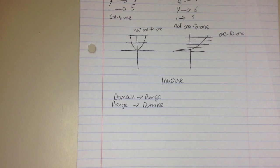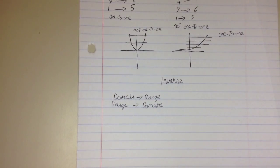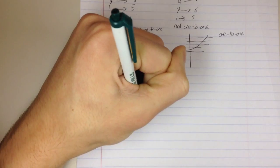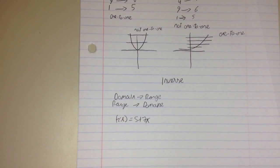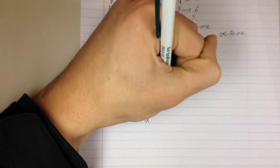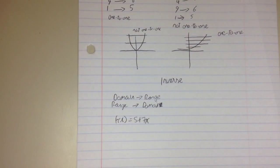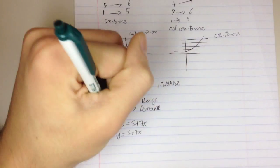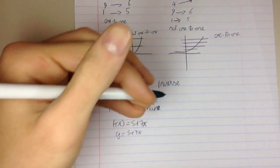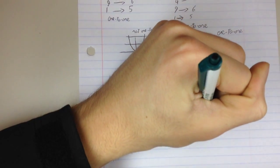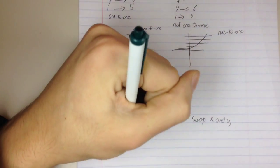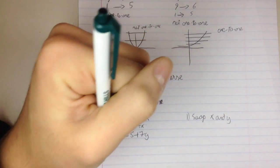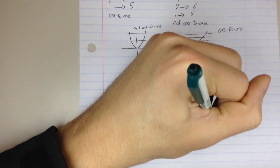Finding the inverse of a function once you know it is one-to-one is pretty easy. Starting with the example f(x) = 5 + 7x, the way you'd find the inverse is to first write this as y instead of f(x) — so y = 5 + 7x — and then swap the x and y values, giving you x = 5 + 7y.